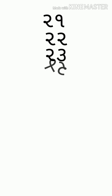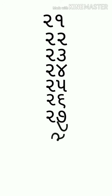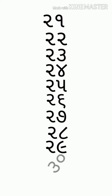બગડે પાંચડે પચ્ચીસ, બગડે છગડે છવ્વીસ, બગડે 7 ડે 27, બગડે 8 ડે 28, બગડે 9 ડે 29, ત્રગડે મીંડી 30. હવે ઘર-લેસનનો ટાઇમ થયો. આજે 1 થી 31 સુધીના અંકો.